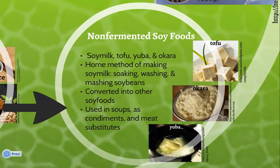Soy milk is heated until a solid layer forms at the top that is removed and dried, resulting in a chewy, flavorful delicacy called yuba. Okara is made from the solid leftover when soy milk is filtered. The ways that these soy foods can be eaten range from a substitute for meat to a condiment in a variety of soups and dishes.